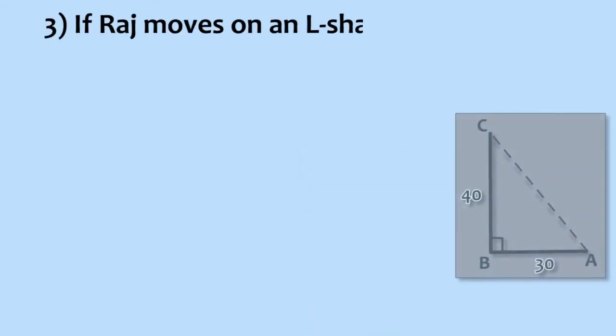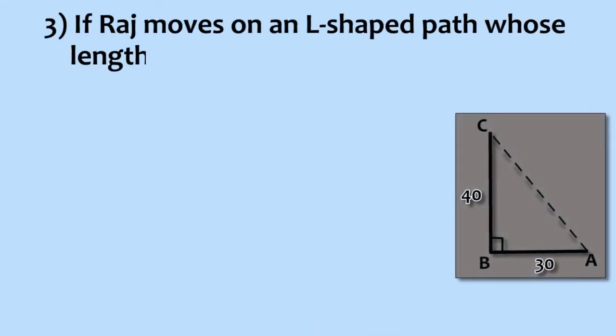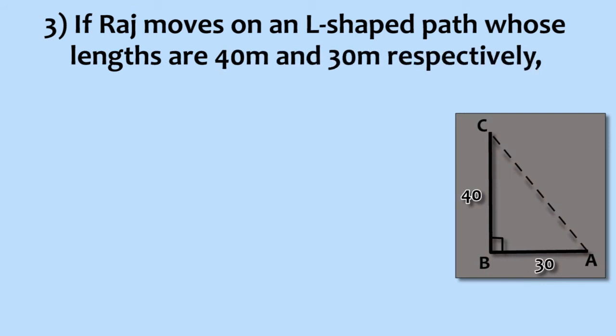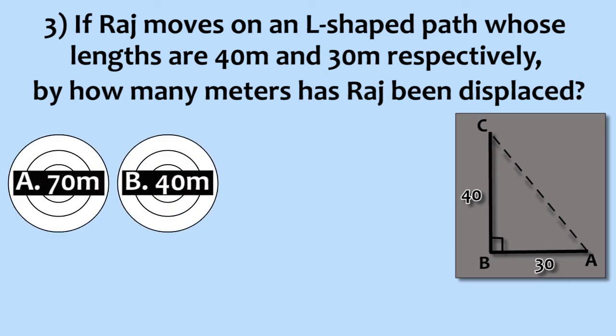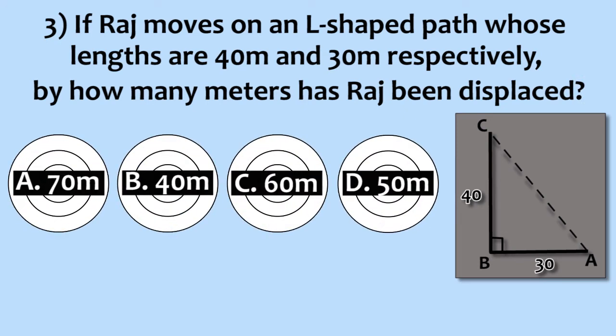If Raj moves along an L-shaped path, whose lengths are 30 meters and 40 meters respectively, by how many meters would Raj have been displaced? 70 meters, 40 meters, 60 meters, 50 meters.